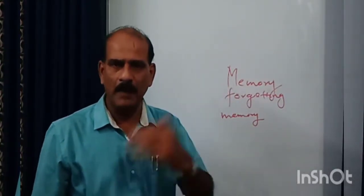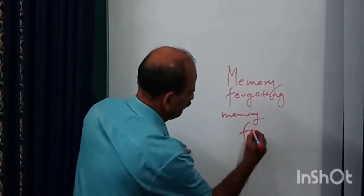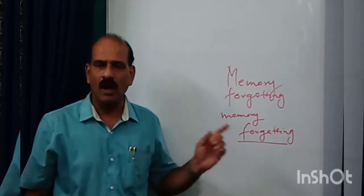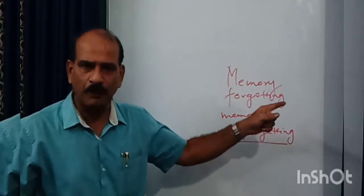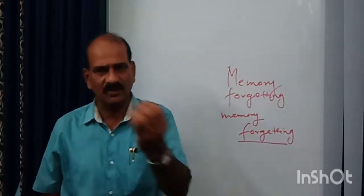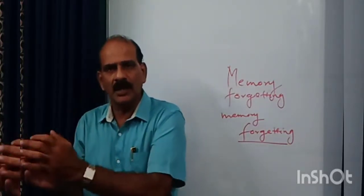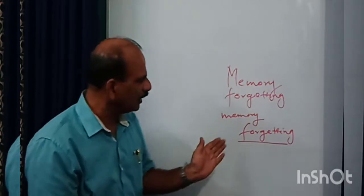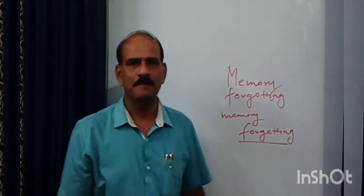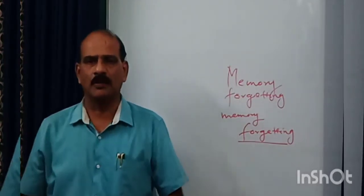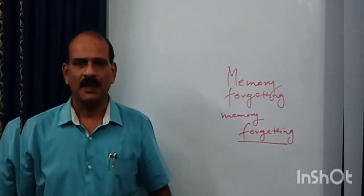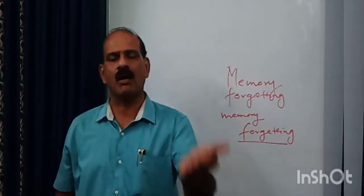What we learn is stored in our brain — that process is technically called memory. We remember only selective things; the remaining items are faded in our memory. This fading of information is technically called forgetting. In other words, failure to record the learned items is known as forgetting.